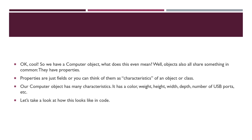Properties are pretty much like characteristics in a sense. We can think of our computer object as having many different characteristics such as a color, a weight, a height, width, depth, number of USB ports, et cetera. So let's actually take a look at how this looks like in code.